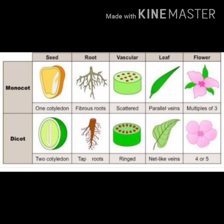You will see all the seeds. I hope you understand that both of them are different. Monocot is 1 cotyledon. Roots in the two of them are different — fibrous and taproot. Ring-like structure of xylem or vascular bundles. Parallel vs network of veins in leaves. Monocot has multiples of 3 petals. Dicot has multiples of 4 or 5 petals. I hope you understand the differences.